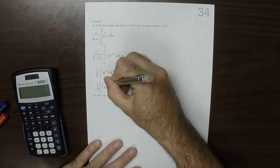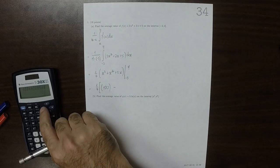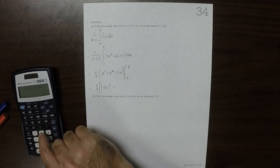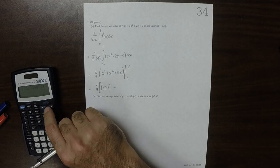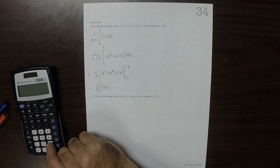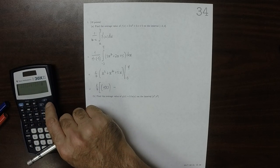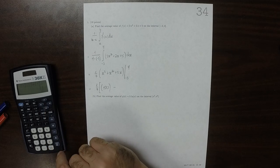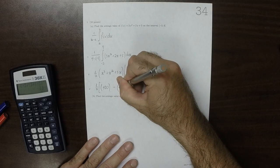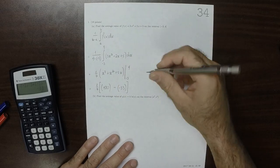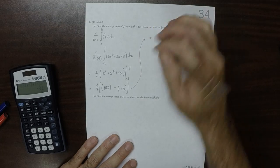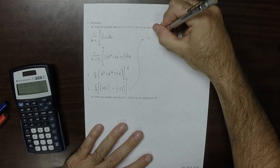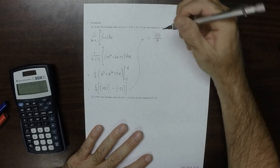So 100 minus plugging in negative 3. So 100 minus negative 33, that's 133. So 133 over 7.